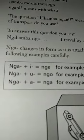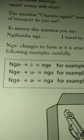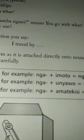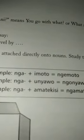Nga plus a noun starting with the letter i changes to nge. For example, nga plus imoto becomes ngemoto.